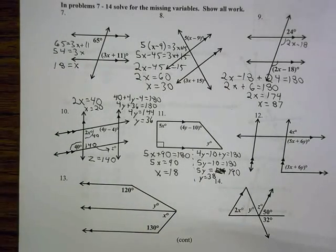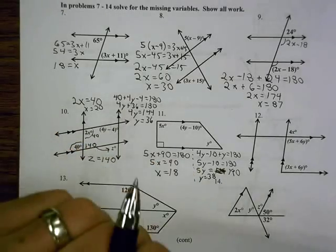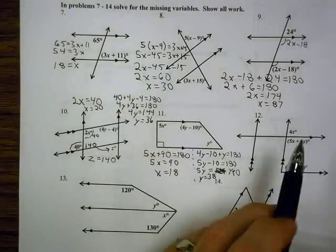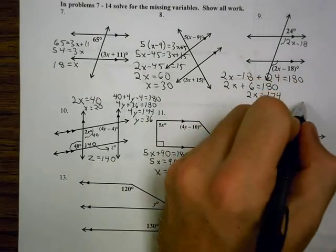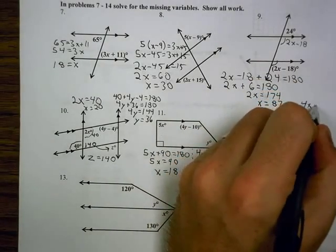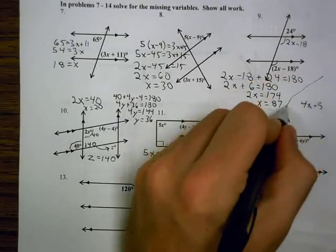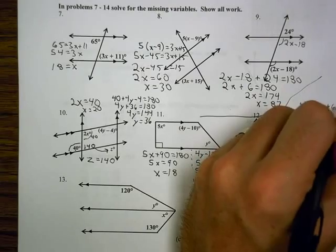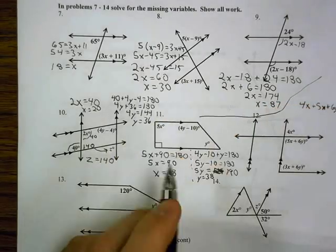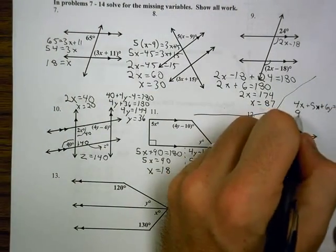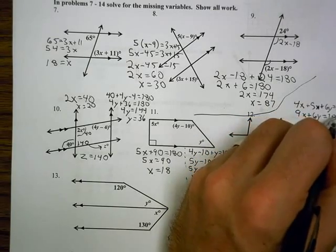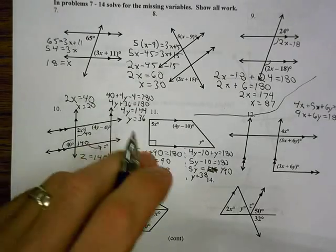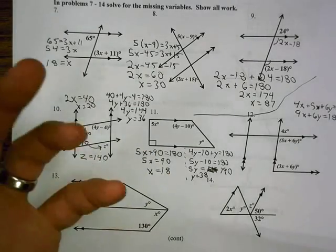Number 12, we have a little bit different approach to this one than we commonly use, but I can actually say that these two angles are supplementary. So I'm going to say 4x plus 5x plus 6y equals 180. I'm going to combine those terms and say 9x plus 6y equals 180. But we're kind of stuck here because we have one equation and two unknowns. We can't solve for that.